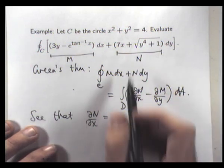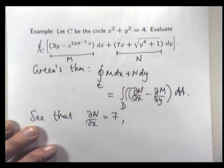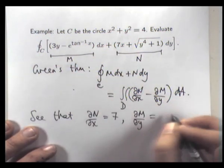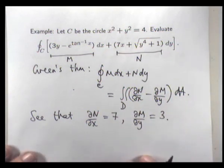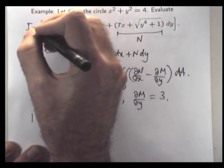So dN/dx is going to be 7. Looks pretty simple. dM/dy is going to be 3. So what does that mean? Well, so let's call this I, shall we? Just for something different.